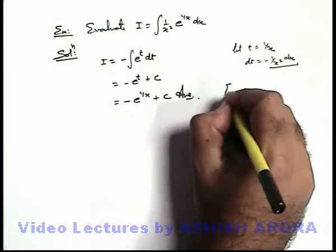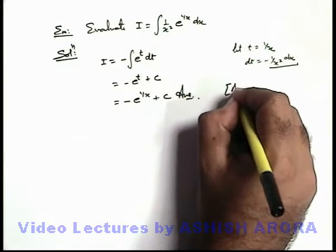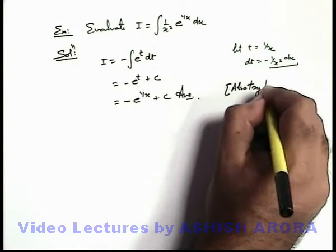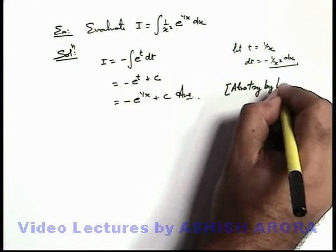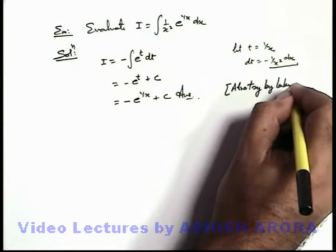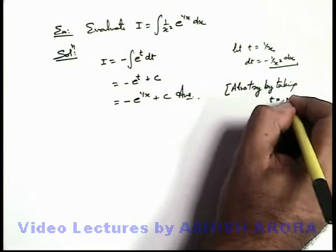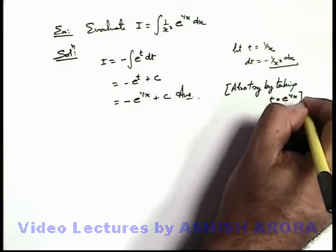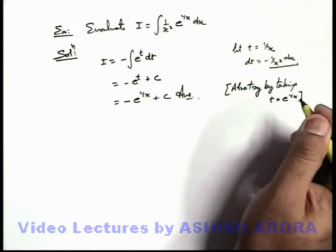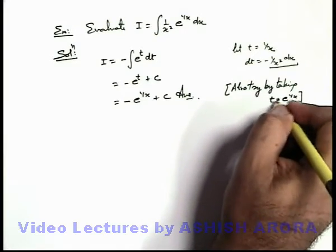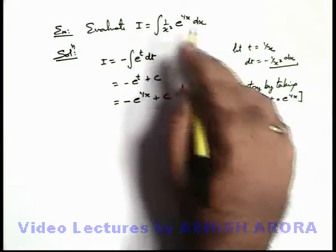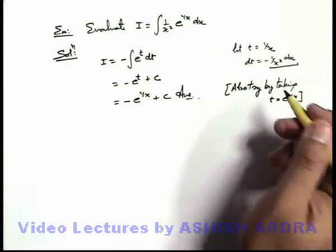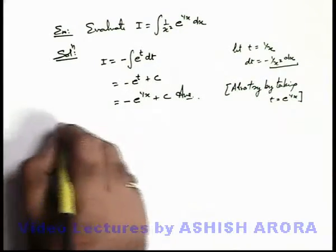On integrating e^t we get just e^t plus c. As t is our own variable we eliminate it by putting t as 1/x, giving minus e^(1/x) plus c, which is the answer. Students must also try by taking t equal to e^(1/x) — using t equal to e^(1/x) also you'll get the similar result. Try yourself on this.